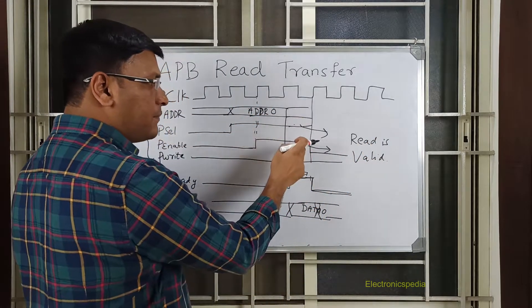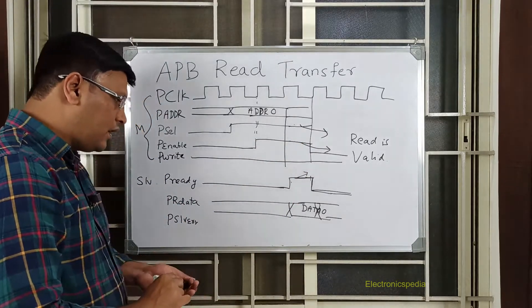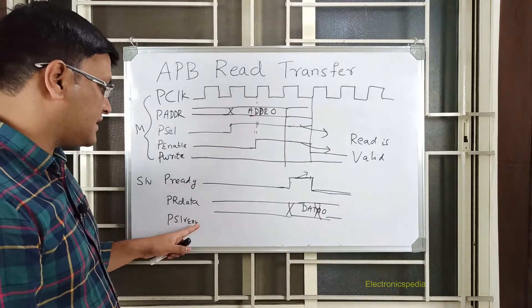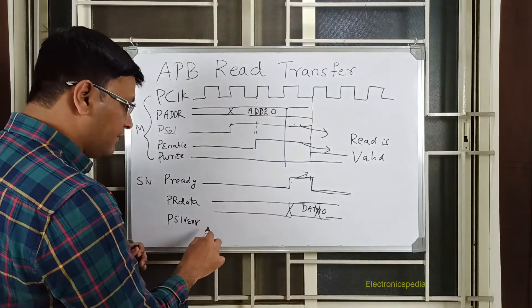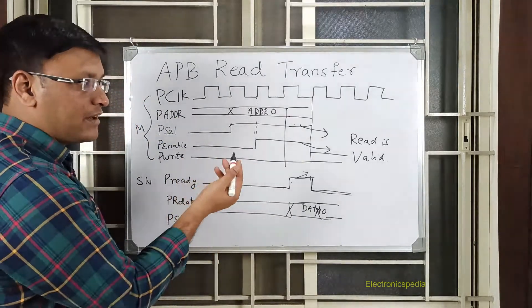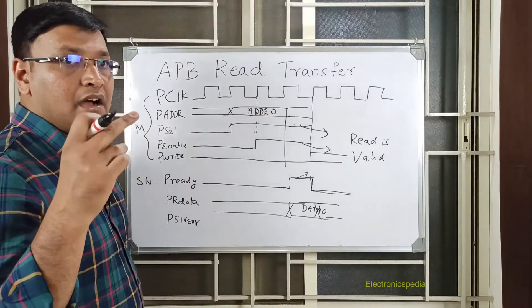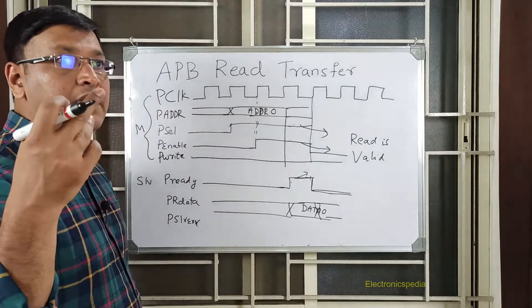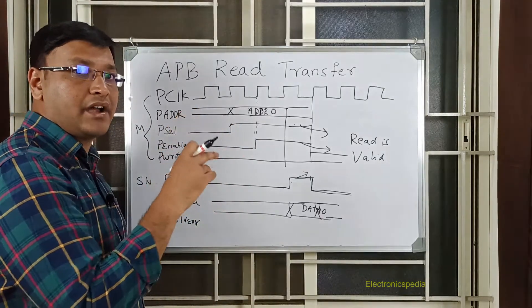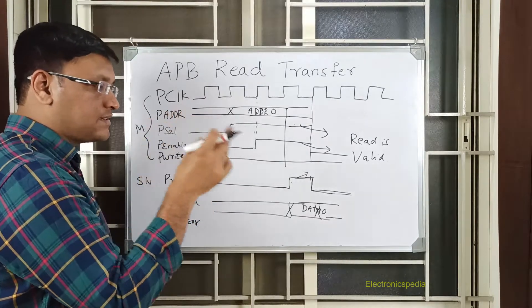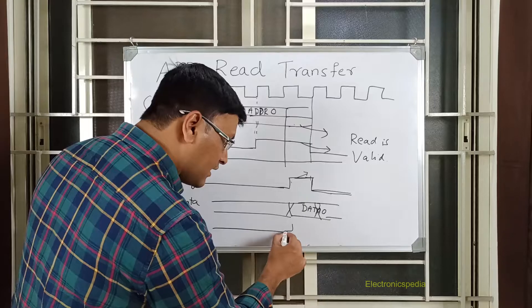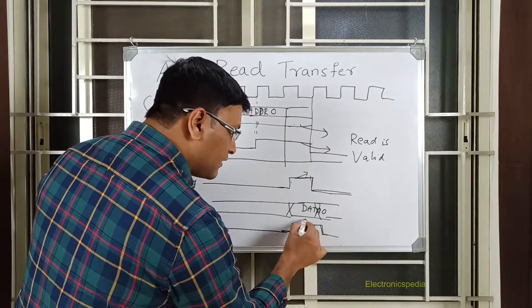I have one more signal here which is PSLVERR. This slave error signal gets asserted if the slave wishes to return an error response. It could be because of multiple reasons - one reason could be that the read data is garbage, or it may not be addressing a particular region. As I explained, there could be address holes, and if the master is trying to access one of those, then the slave can choose to assert this slave error.